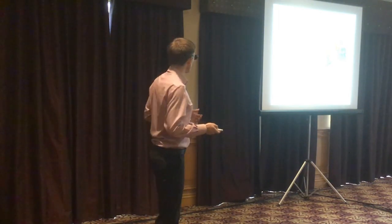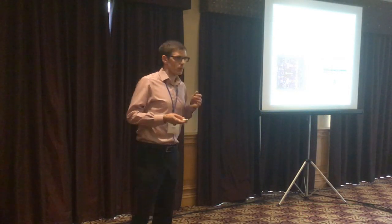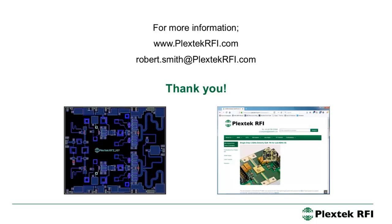In summary, we designed an amplifier working over 3.4 to 3.8 GHz with 18 dB gain in Doherty mode of operation, good input and output return losses, saturated output power of 45 dBm with a peak power added efficiency of 50%. At 8 dB back-off, we get a PAE of 31.5%. Using a representative 5G new radio signal with 100 MHz bandwidth, we achieved an EVM of 3.5% and ACLR of 33 dBc. More information is available at plex.rfi.com, with an RF GlobalNet article coming soon. Feel free to contact us or speak to us during the break.